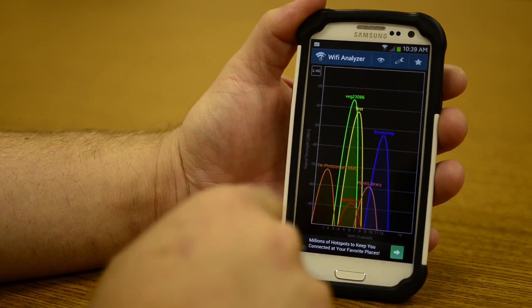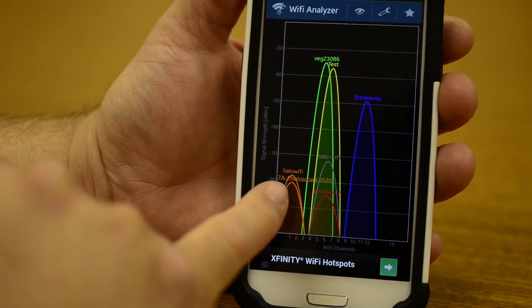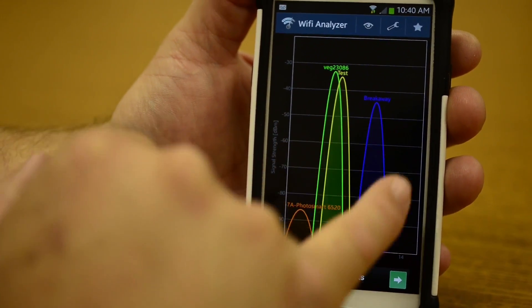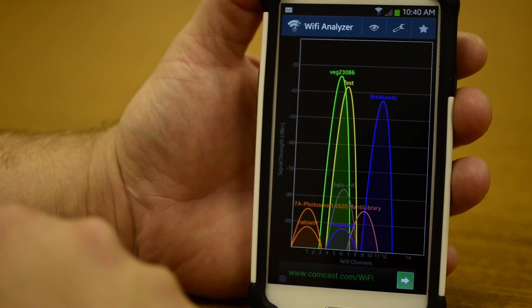If you click on that, it's going to bring up all the wireless signals that are within range, and you can see right here all the different colors indicate different wireless signals or different wireless routers that are within range of my device.